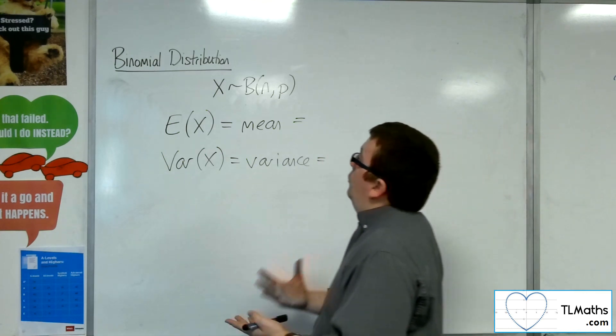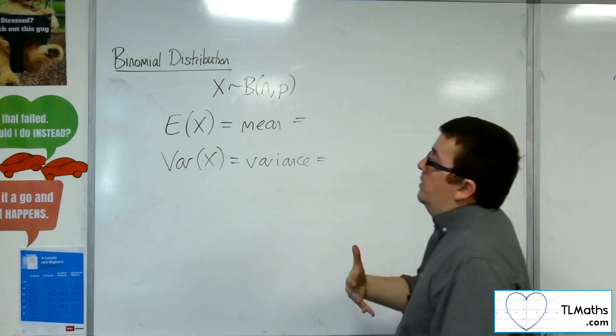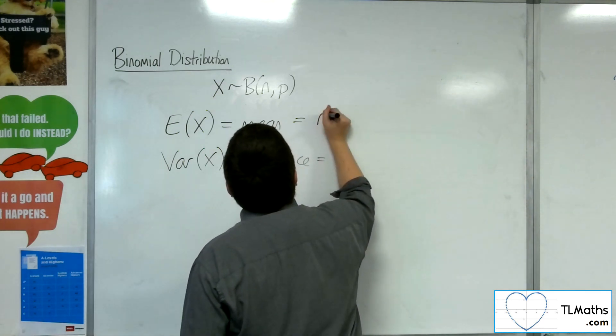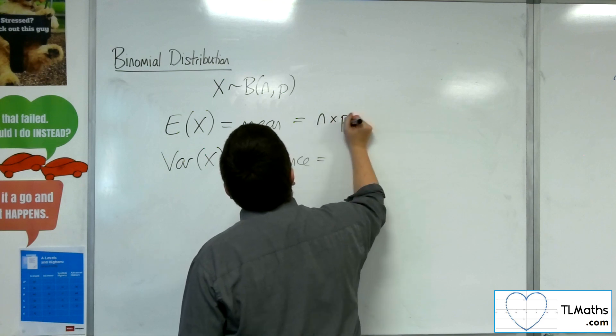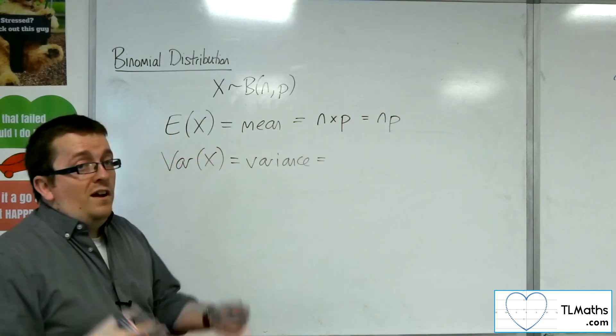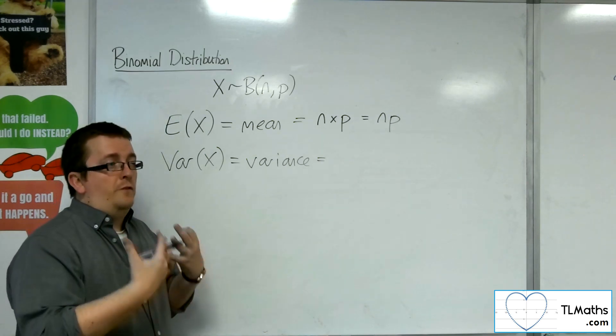For the binomial distribution, it can be shown that the expected value, the mean, is n times p. So just np. The idea there, this bit is kind of obvious.